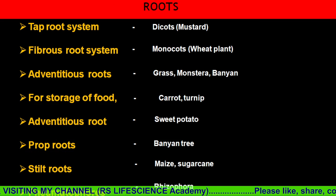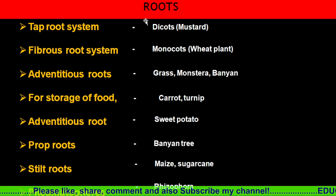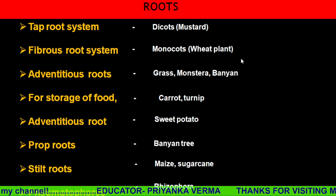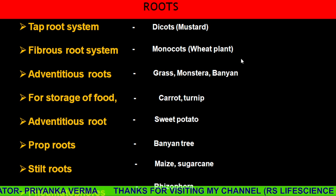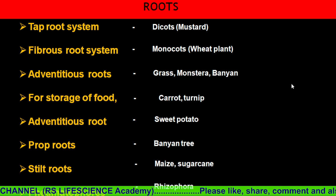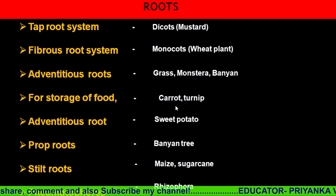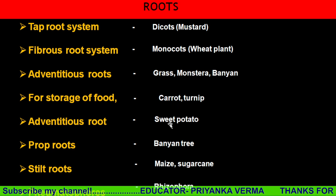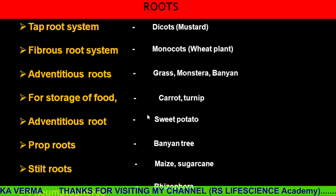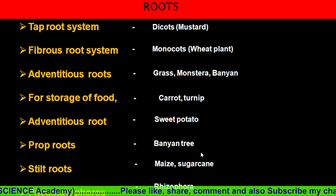Let's do some basics about root systems. Mostly dicot plants like mustard have a tap root system. I have made a video on this. For the fibrous root system in monocots, which are seasonal plants, we grow them in a season to obtain a new crop. Advanced roots are seen in grass, monstera, and banyan. For food storage, there is turnip, which is a modified root, and sweet potato — our shakarkandi — which is an adventurous root used as food store. The prop roots in banyan support the plant. Please watch my previous video on banyan for a clear concept.